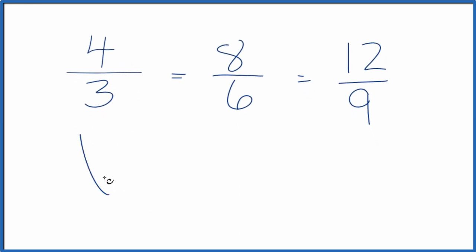So to do that, we take 3 into 4. So 3 goes into 4 just one time with 1 left over. Then we bring the denominator down here. And 4 thirds is also equal to 1 and 1 third.